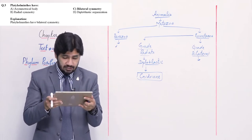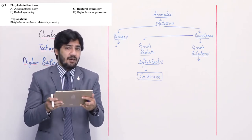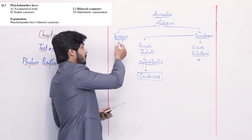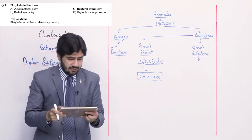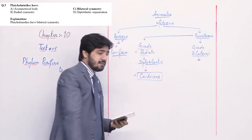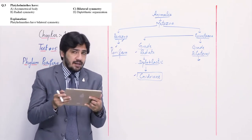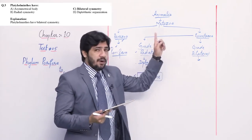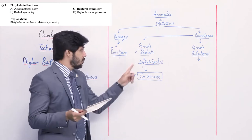Question number 3: Platyhelminthes have — alpha asymmetrical body, beta radial symmetry, charlie bilateral symmetry, and delta diploblastic organization. Asymmetrical body belongs to Parazoa — Porifera — so alpha is not correct for Platyhelminthes. Radial symmetry belongs to Nidarians/Cnidaria, so beta is also not correct. All phyla except Porifera and Cnidaria fall under grade Bilateral, so charlie (bilateral symmetry) is correct regarding Platyhelminthes. Delta — diploblastic — belongs to grade Radiata, not Platyhelminthes.